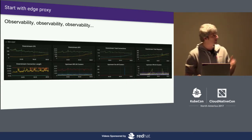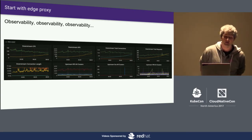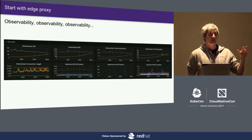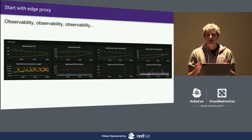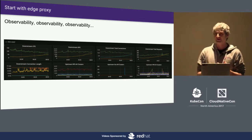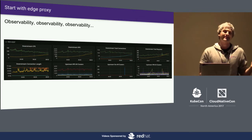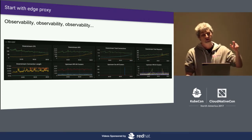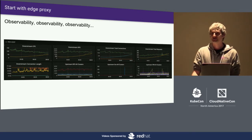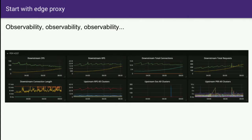Almost immediately we found value. Here's an example of one of the dashboards we provide at Lyft. On a per-host basis you see our front edge nodes — stats like connections per second, requests per second. On the bottom row you see latency on a per-backend-service basis, or 500s on a per-backend-service basis. You go from pulling logs out of S3 and trying to understand CloudWatch, which is super bad, to having excellent visibility and being able to much more quickly pinpoint which services are problematic. It's all about observability.